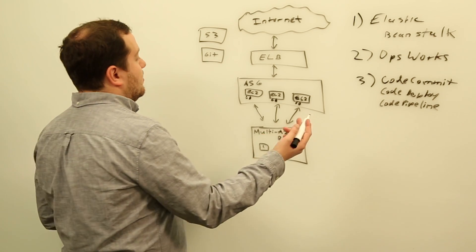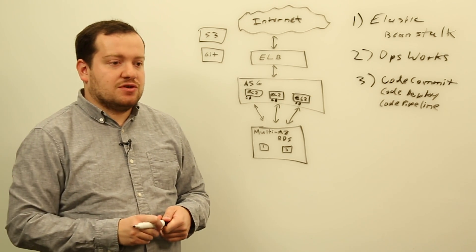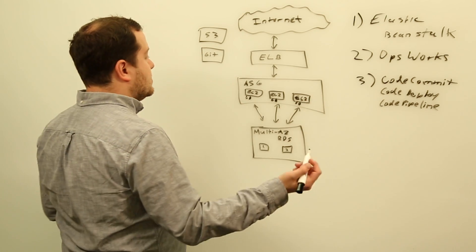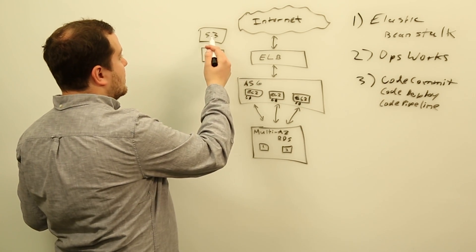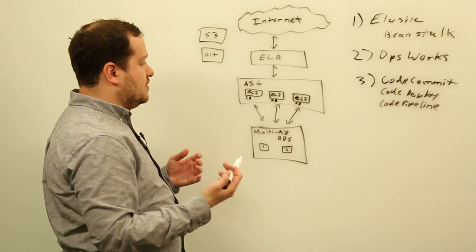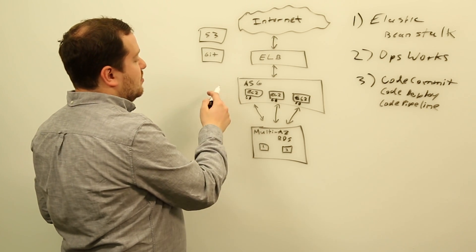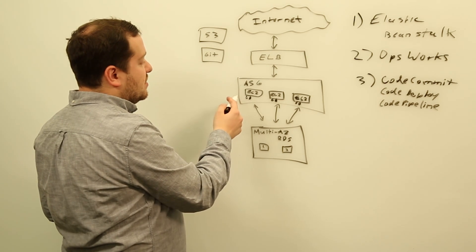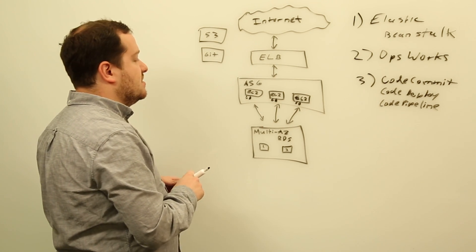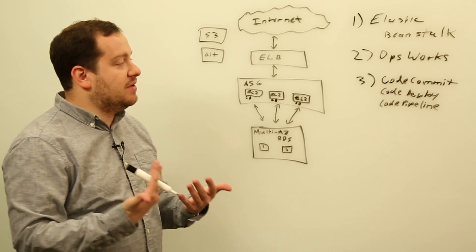And then we'd have CodePipeline. So CodePipeline is our continuous delivery service. And CodePipeline kind of puts everything together here in our scenario. CodePipeline is going to monitor our S3 buckets or Git repository. And as soon as there's a change deployed to it, it's going to initiate a CodeDeploy. So it's going to tell CodeDeploy, hey, install or deploy my new code on my EC2 instances.